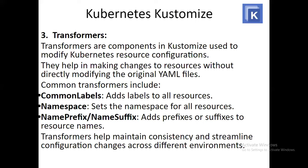The third concept is transformers. Transformers are components Kustomize uses to modify Kubernetes resource configurations without directly modifying the original YAML files. Common transformers include: common labels — adds labels to all resources; namespace — sets the namespace for all resources; name prefix and name suffix — add a prefix or suffix to resource names. Transformers help maintain consistency and streamline configuration changes across different environments.